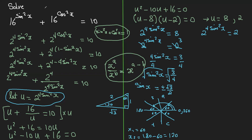Since they didn't restrict x to between 0 and 360, we need the general solution. Adding 180 repeatedly cycles through all quadrants. So x1 equals 60 plus n times 180, where n is a member of all integers, and x2 equals 120 plus n times 180, where n is a member of all integers.